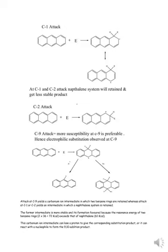When an electrophile attacks at the C1 position, it forms a product that exists in two isomeric forms. When an electrophile attacks at the C2 position, only one isomeric form is obtained. At C1 and C2 attack, the naphthalene system is retained, giving a less stable product. When an electrophile attacks at the C9 position, the resulting product undergoes deprotonation to give the electrophilic substitution product.